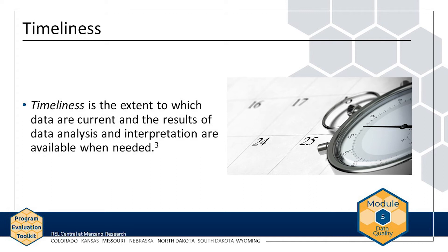In another example, if the evaluation team wants to assess and adjust AMP implementation, the team should not examine high school graduation rates, because it will be too late to change program implementation four or more years later, given that AMP participants are middle school students.